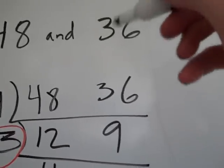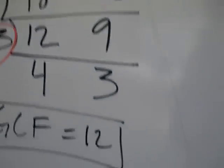So 12 is the biggest factor of 48 and 36. 12 fits into 48, and 12 fits into 36.